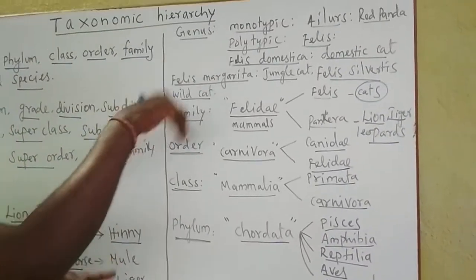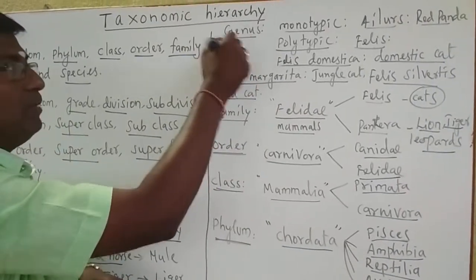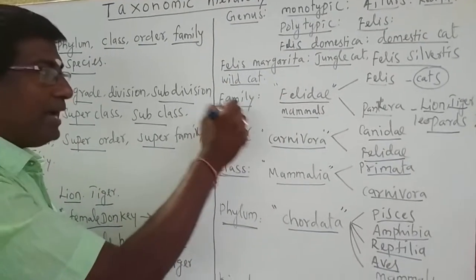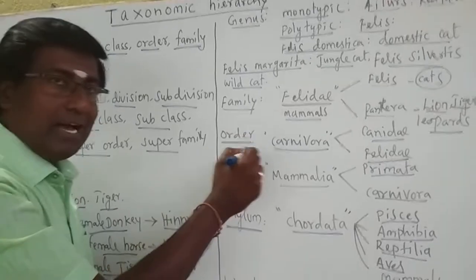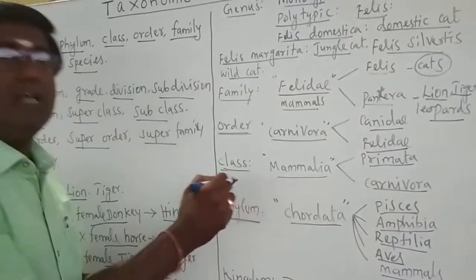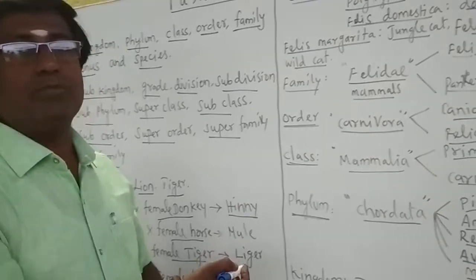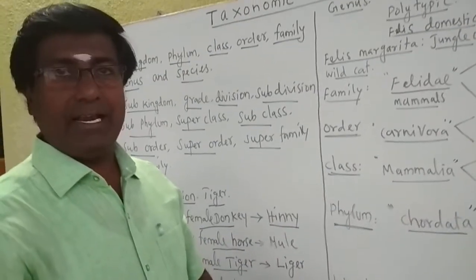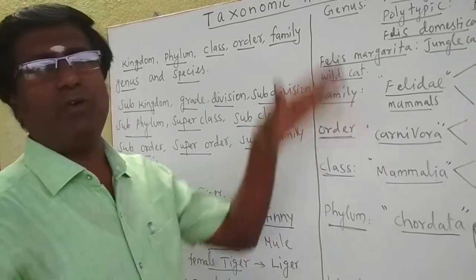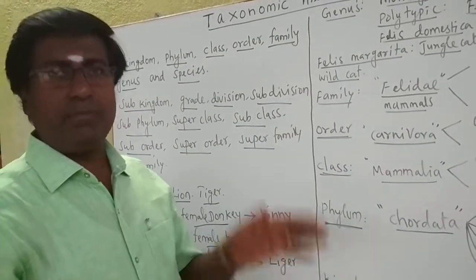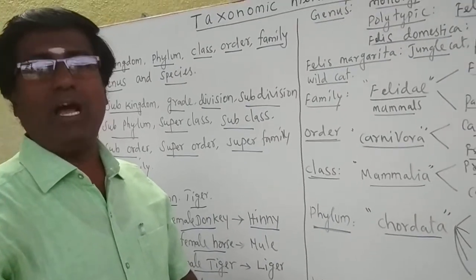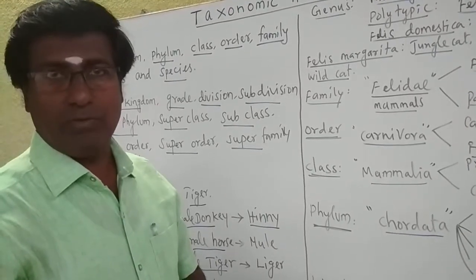When moving from one taxonomic category to another, genera with similar characters are placed in one family; similar-character families in one order; similar-character orders in one class; similar-character classes in one phylum; and all phyla into the kingdom. This is the taxonomic hierarchy, by which any animal can be classified and easily studied and understood. Thank you, have a nice study — see you in the next session.